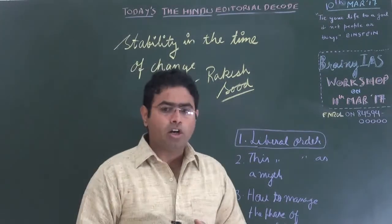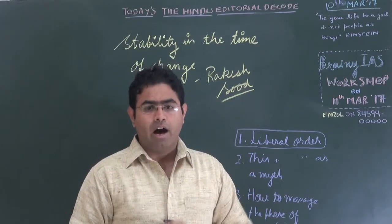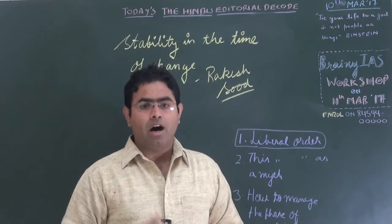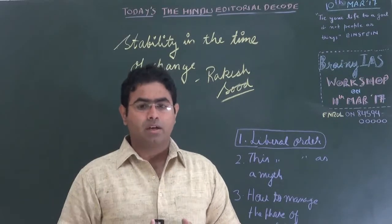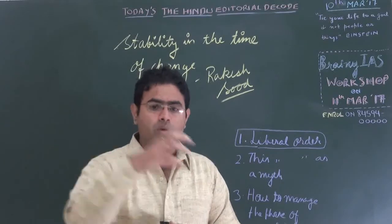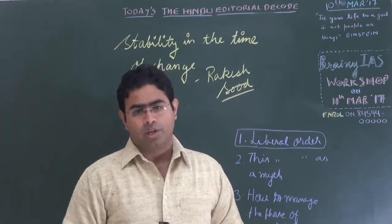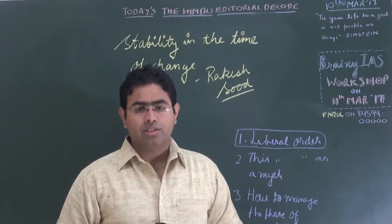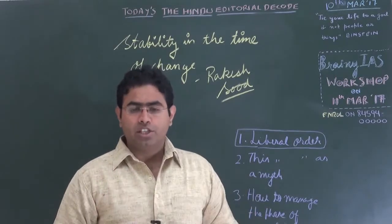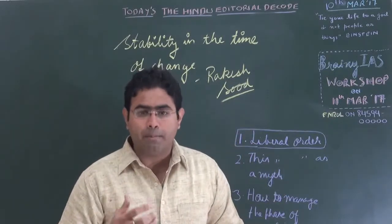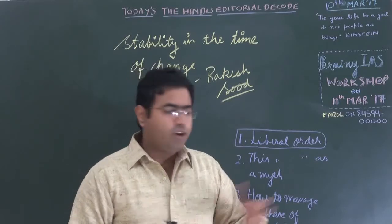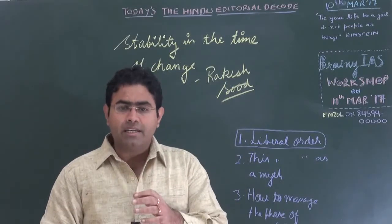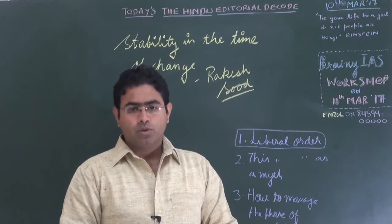This liberal order term has also come into being because of increasing fundamentalism, increasing nationalism, and forces blowing against globalization — all of which unfolded after Donald Trump became President of the United States. According to the author Rakesh Sudh, liberal order was primarily coined after the Second World War, when colonialism and imperialism were done away with and institutions like the United Nations, IMF, and WTO emerged.